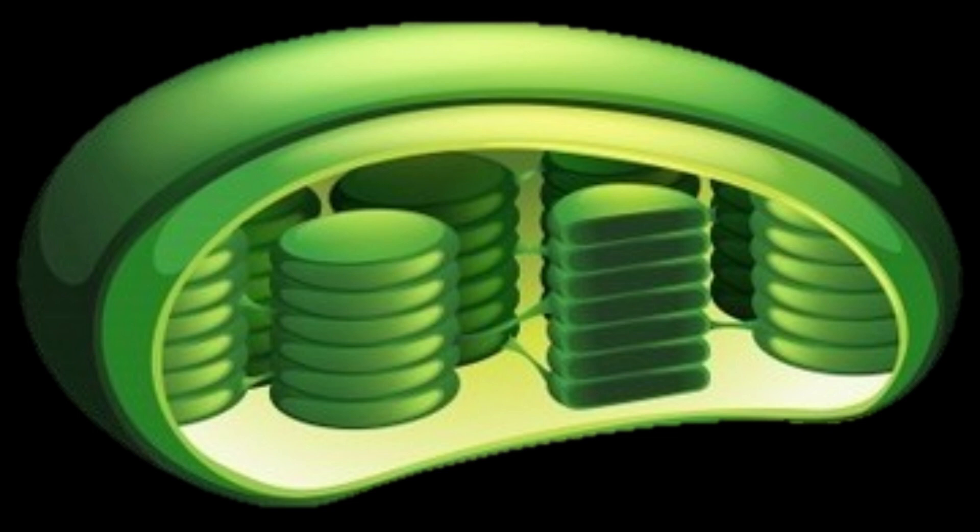Looking at the chloroplast here, we can see the thylakoid. The thylakoid are membrane-bound compartments in the chloroplast. Inside the thylakoid is a substance called lumen. And here, outside the thylakoid, we have stroma, which is an aqueous fluid. These reactions take place in the membrane of the thylakoid.